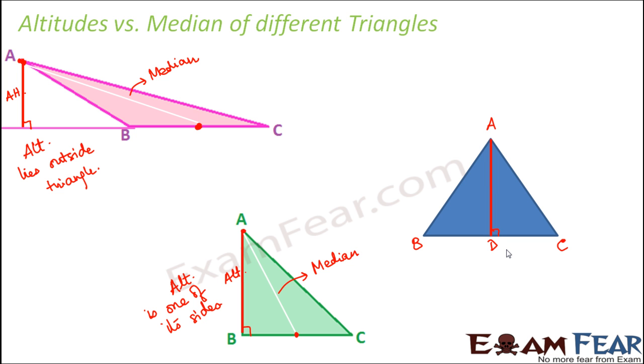When we talk about altitude it gives us the height of a triangle. Now height of a triangle from different perspectives are different. So we can draw three medians in a triangle, we can draw three altitudes in a triangle.